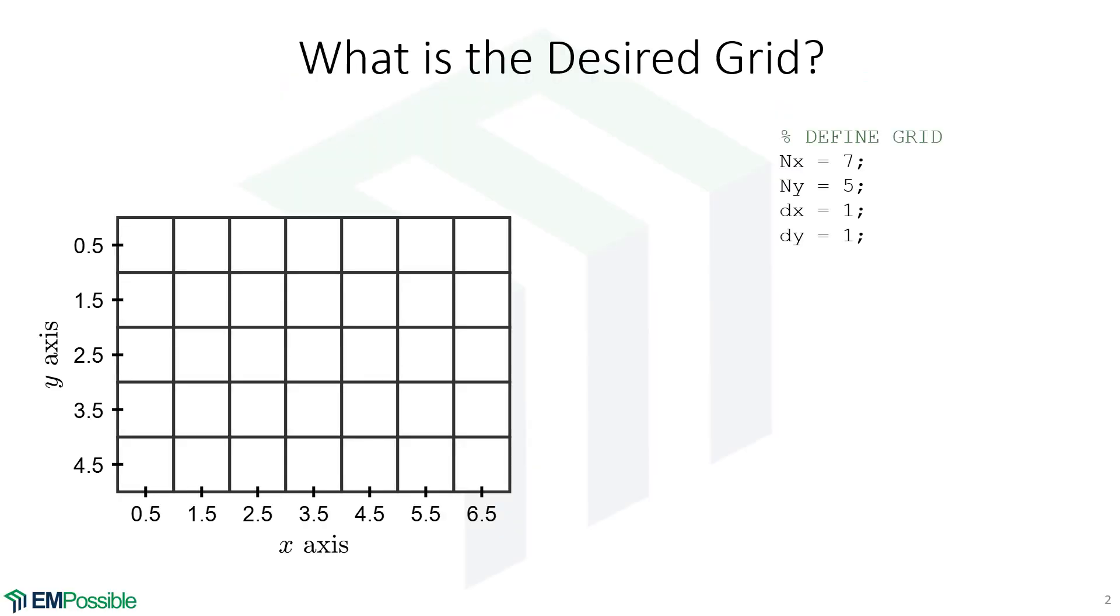Step one: we have some kind of grid in mind and we want to define this somewhere in our code. I created a grid that was seven cells wide, five cells tall, with cell spacing of one. I defined positions for each of these cells along the x-axis and y-axis, just a simple grid.